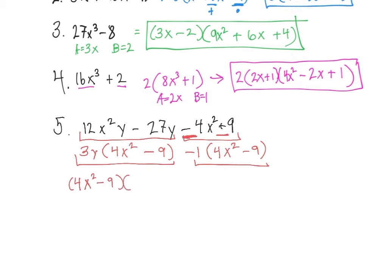So I'm just taking a negative out from each term. Now I've factored out the common factor between each group, and each group has a common binomial. So I'm going to factor out the common binomial, which would be 4x squared minus 9. We will be left with 3y minus 1. We're not quite done because 4x squared minus 9 is the difference of the squares. I like to write the factors that aren't factorable first. Then factor 4x squared minus 9: 2x and 3, so that's going to be 2x plus 3, 2x minus 3.